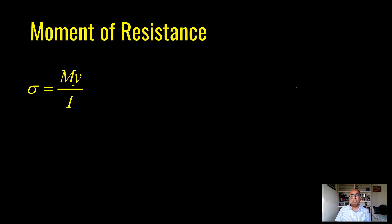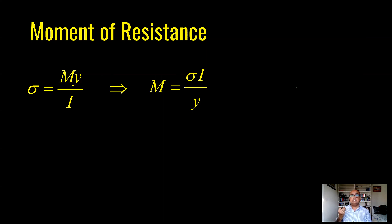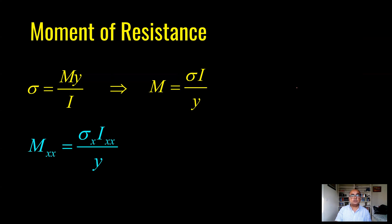Moment of resistance: sigma equals M·Y over I. We can rearrange this to get M equals sigma·I over Y. This gives us the moment of resistance — the moment capacity of the section. In any design, we work out the applied moment and compare it with the moment of resistance. M-XX is sigma-X times I-XX over Y, which is the moment in the major axis direction.